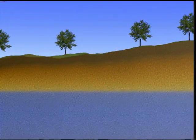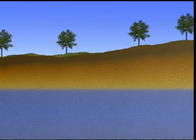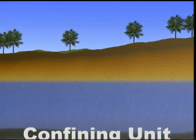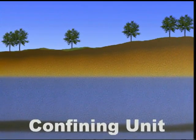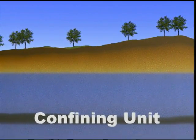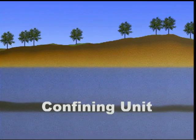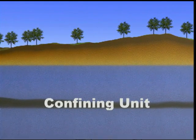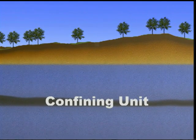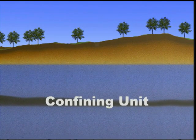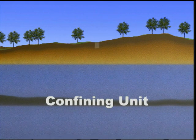Semi-confined and confined aquifers are separated from the land surface and other aquifers by confining units. Water table aquifers are the more easily contaminated aquifers due to their proximity to surface activities.